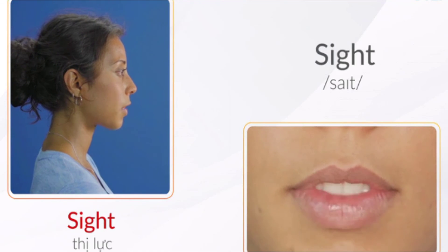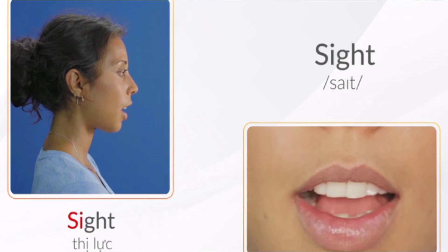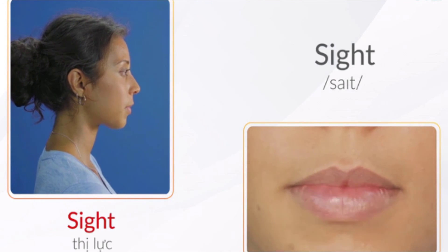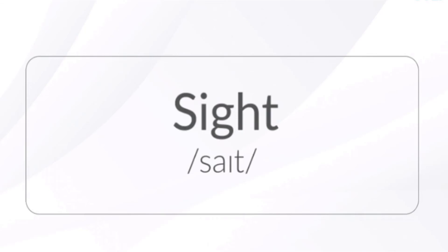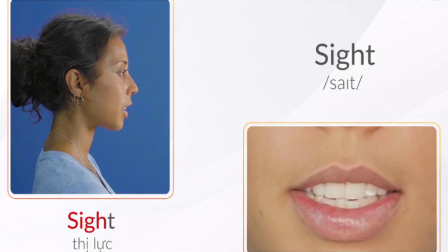Sight. Các bạn chú ý từ này có chữ nguyên âm đôi I, các bạn đọc âm A nối với âm I, âm A đọc dài hơn âm I một chút là được nhé. Một lưu ý nữa đó là từ này kết thúc bằng âm T là 1 phụ âm vô thanh, các bạn chú ý bật rõ ràng nhé.